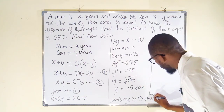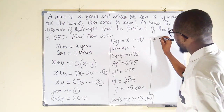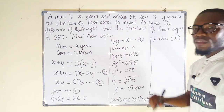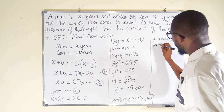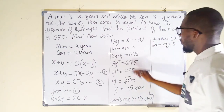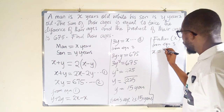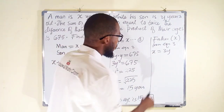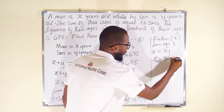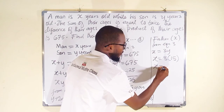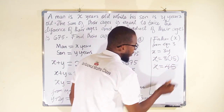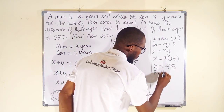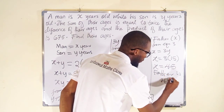For the father, which is x, we use Equation 3: x = 3y. Since y is already 15, we have x = 3 multiplied by 15, which gives x = 45. Therefore, the age of the father is 45 years.